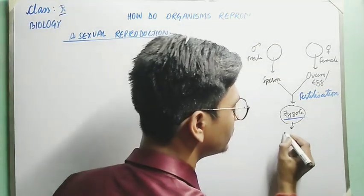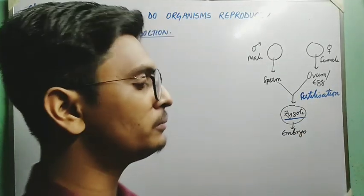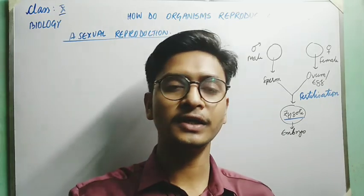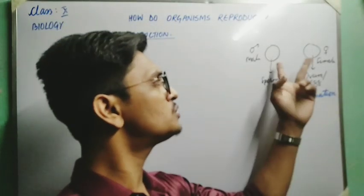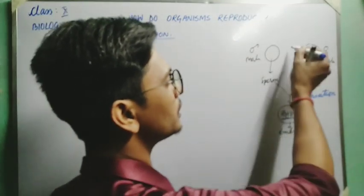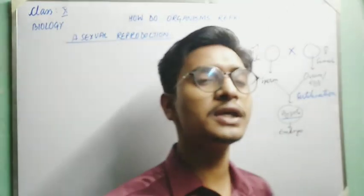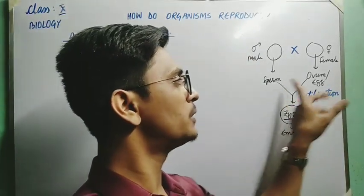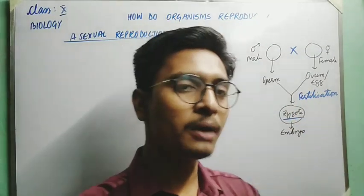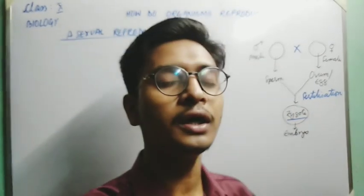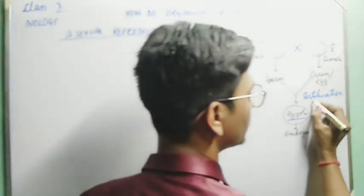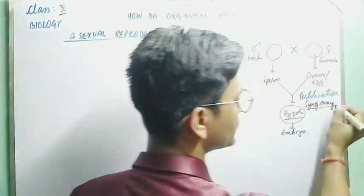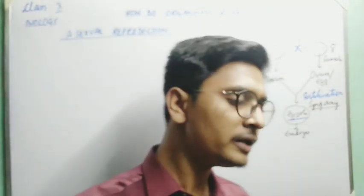From this zygote, an embryo will be developed, and from this embryo a future child — an infant or baby — will develop. In sexual reproduction, two parents are involved and they undergo mating, producing sperm and ovum. These male and female gametes combine to form the zygote, which develops into a full-grown individual. This fertilization process is also known as syngamy.